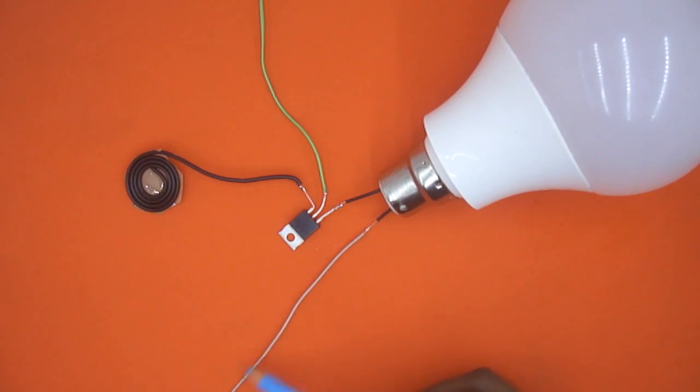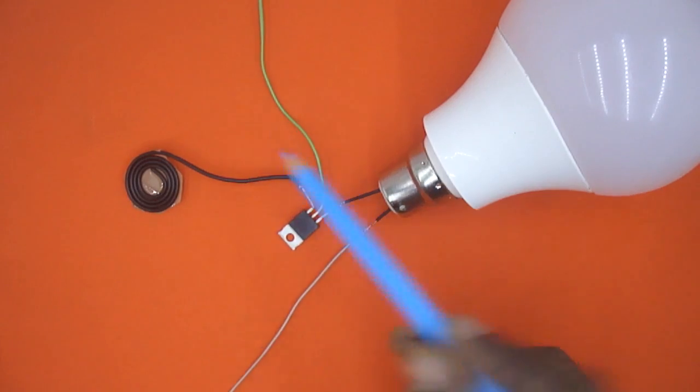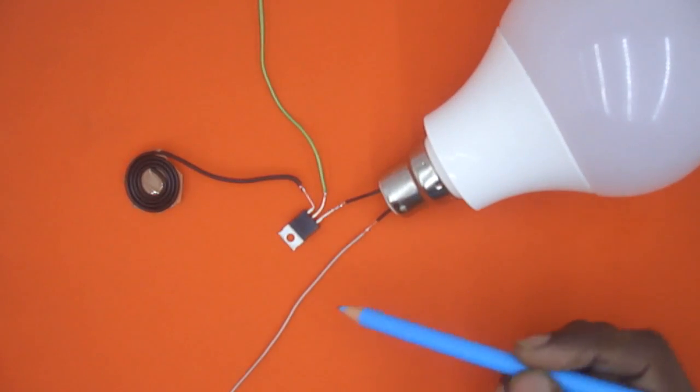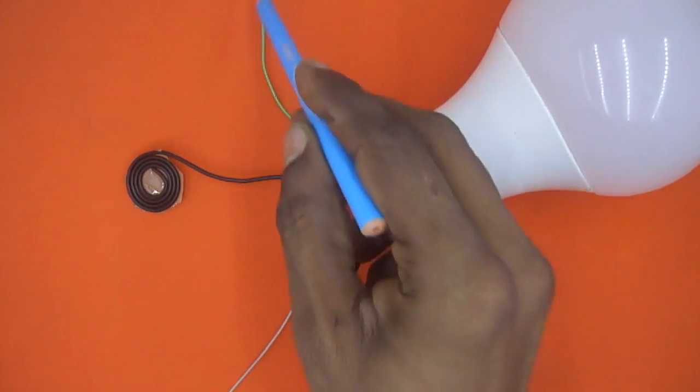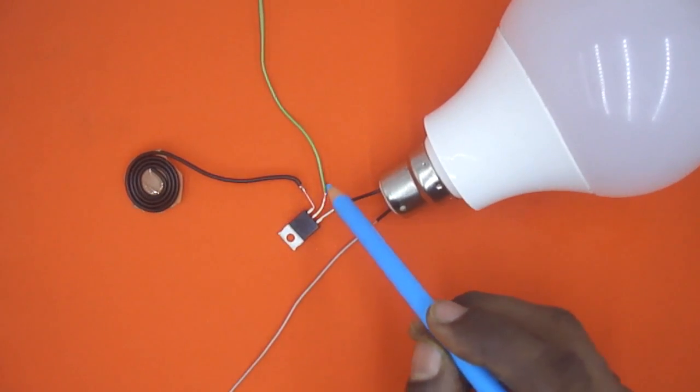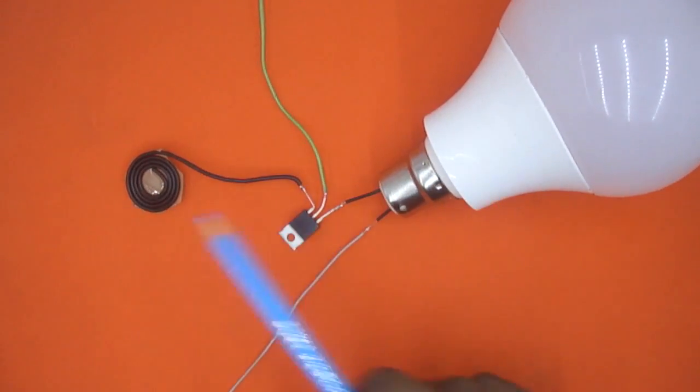This will work perfectly only if this will be phase and this green wire is the neutral wire of AC power supply. Even if you will connect it to neutral and this will get connected to phase, it will work, but there may be some fluctuation or flickering on the bulb.